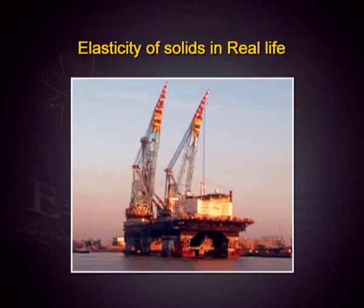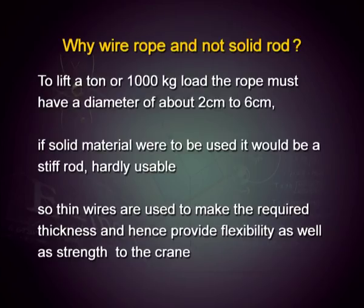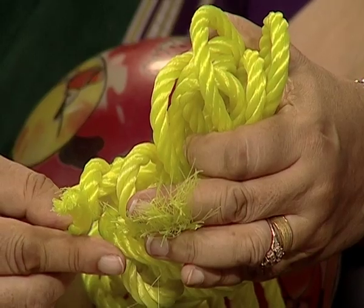How does elasticity change the way we design things? The ropes used for cranes are not solid — they are made up of thin wires. To lift one ton of material, about a thousand kg, a steel rod would need to be about six centimeters in diameter, which would be solid and not flexible at all. Instead, thin wires make up the entire rope so you do not compromise on its strength but gain the flexibility to use it wherever required.